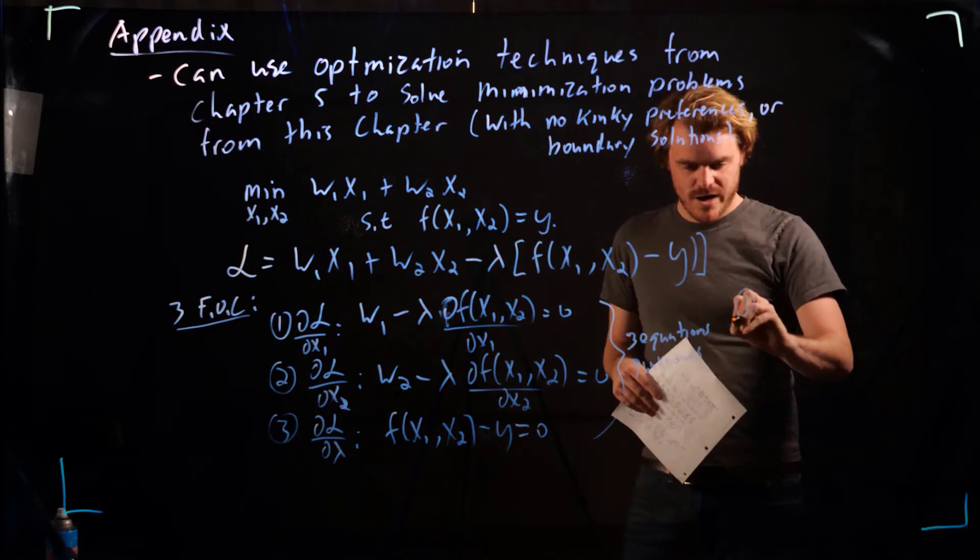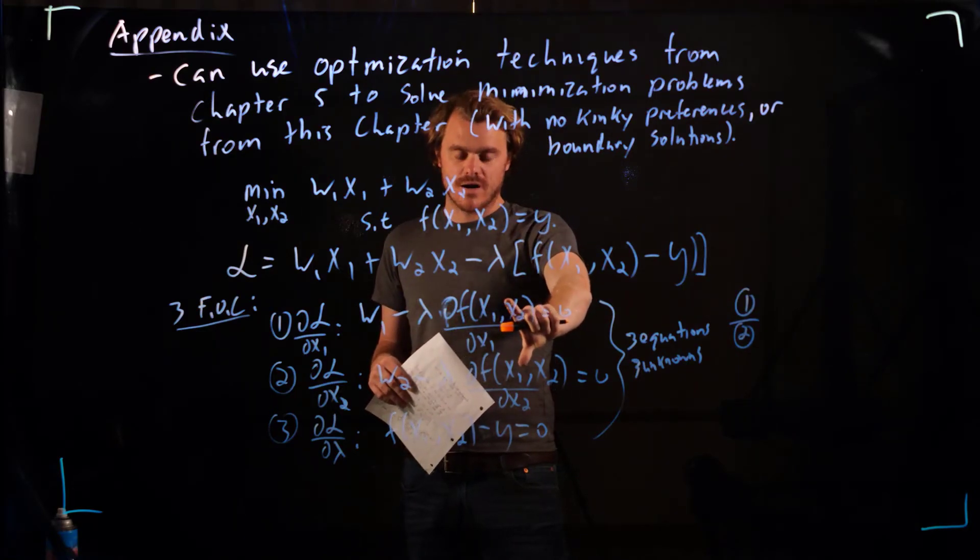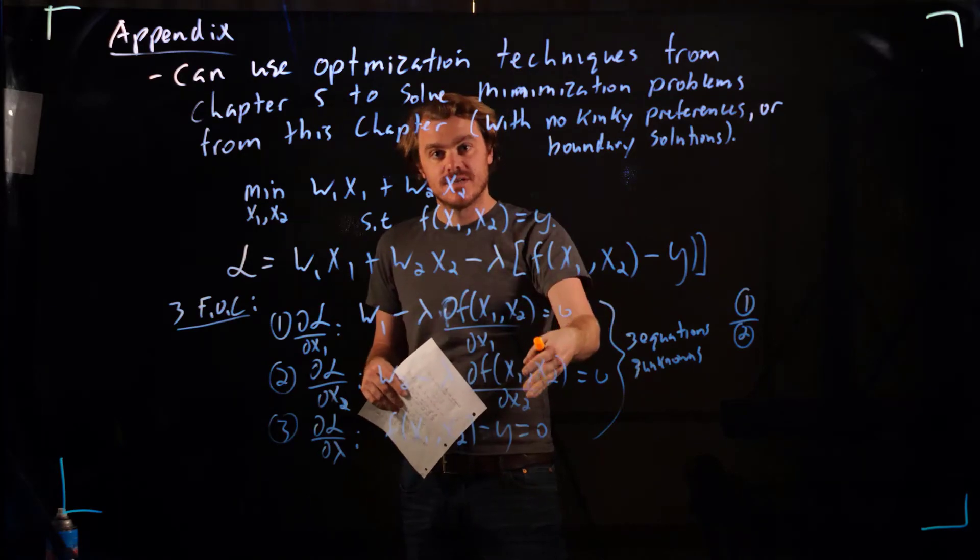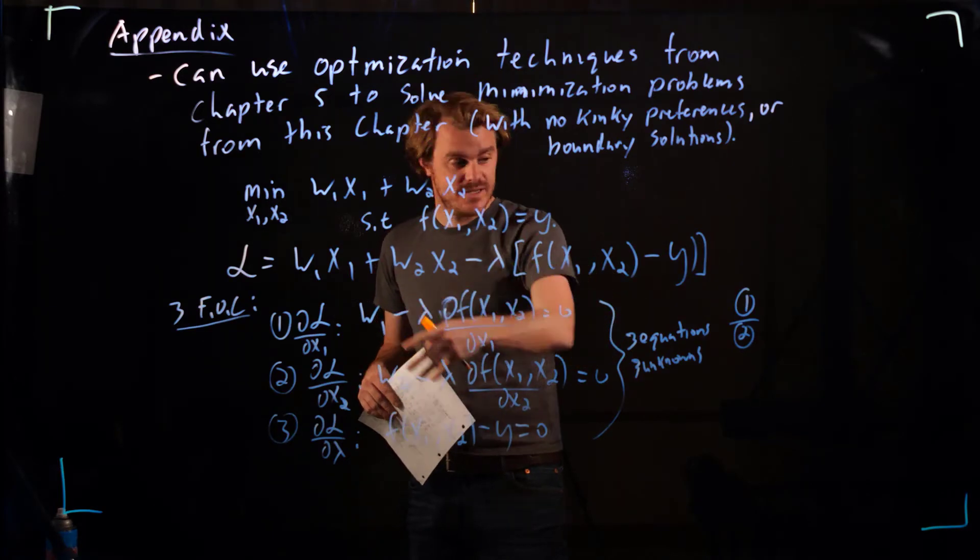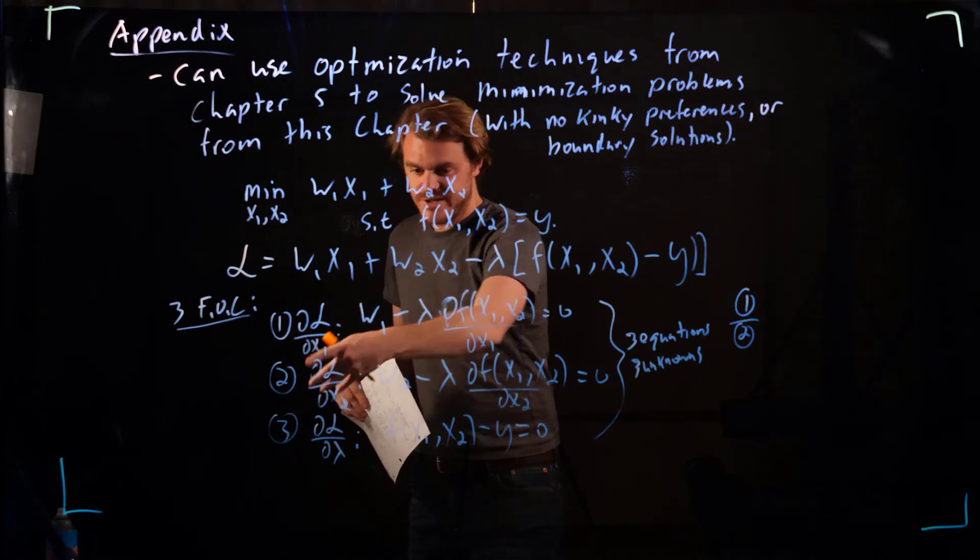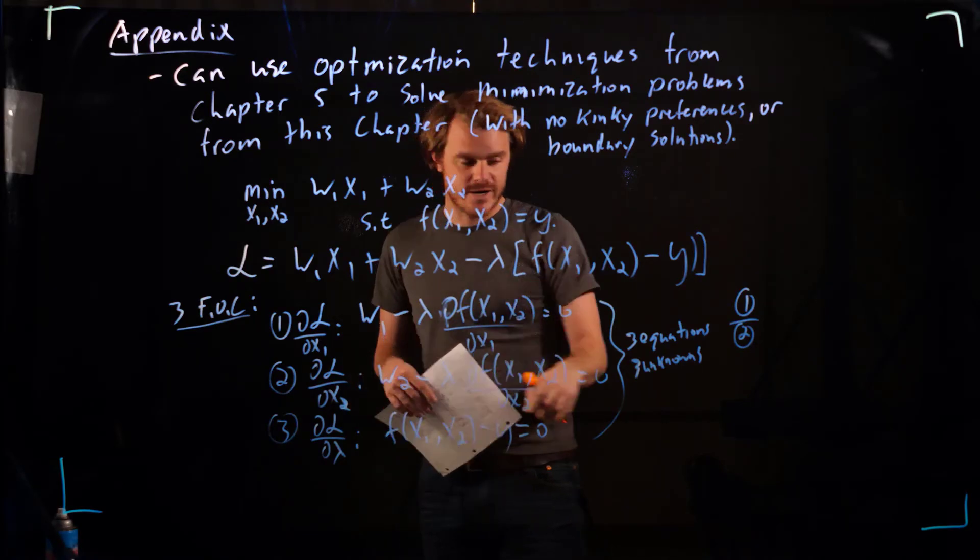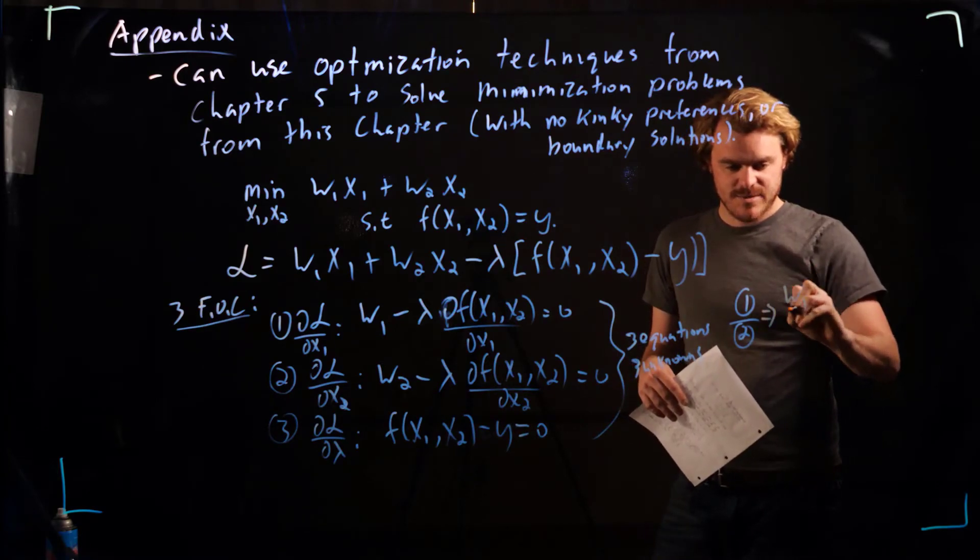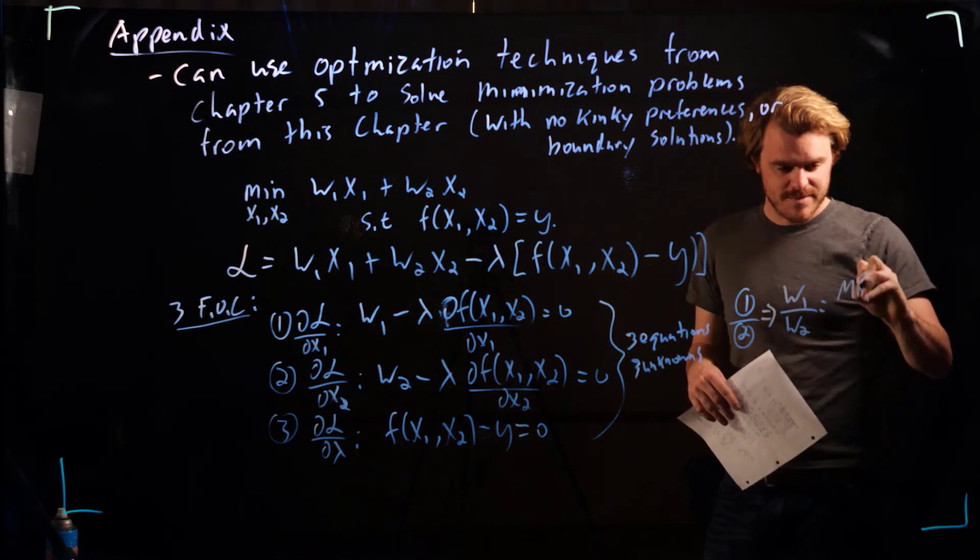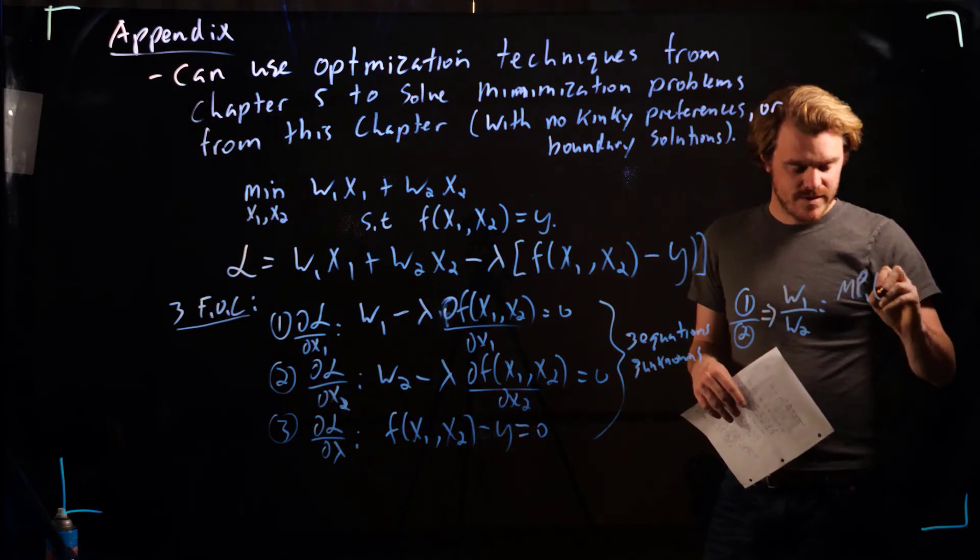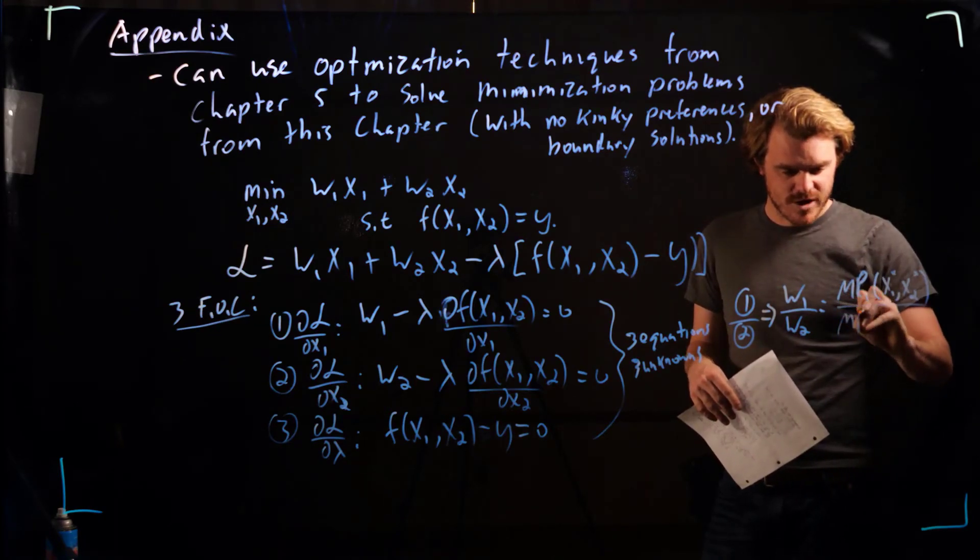If we take 1 over 2 here, we're going to get exactly what our tangency condition was when we looked at the slope of the isocost line. Because if we took the ratio of 1 and 2, the lambdas will cancel out. This is just the marginal product of input 1, this is just the marginal product of input 2. So we're going to get w1 over w2 is equal to the marginal product of good 1 over the marginal product of input 2.